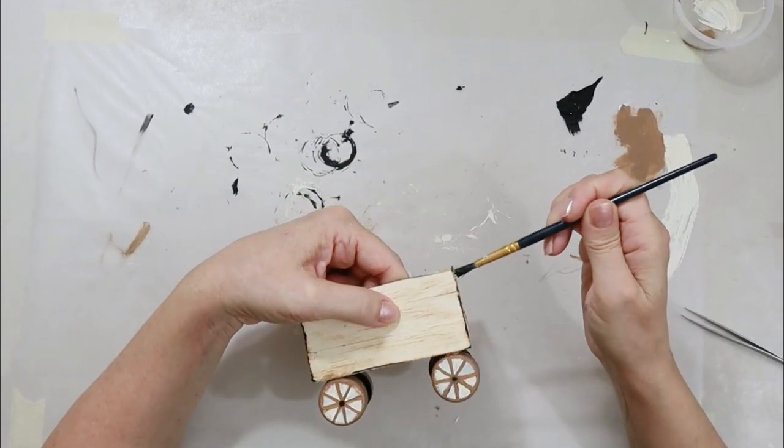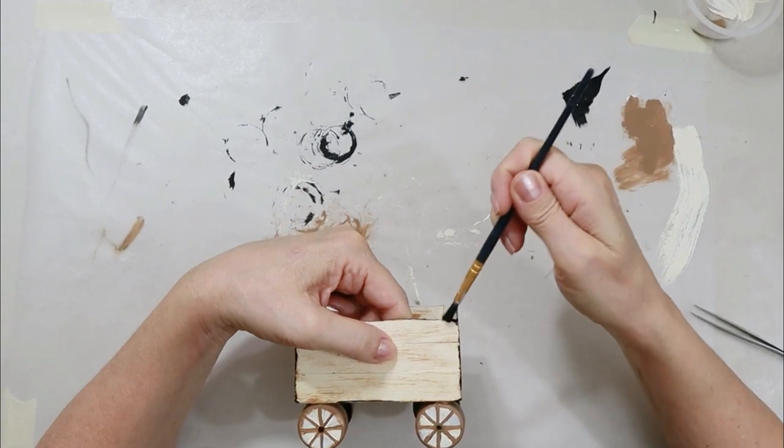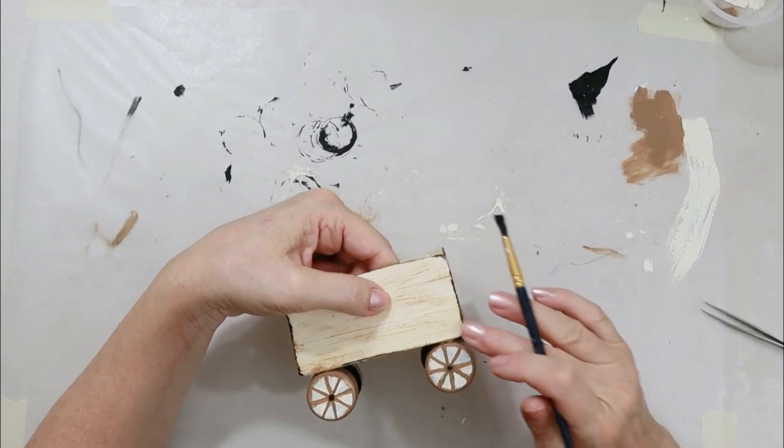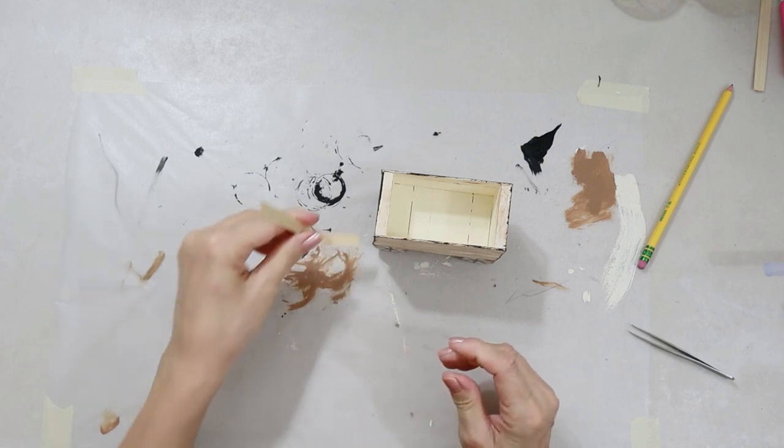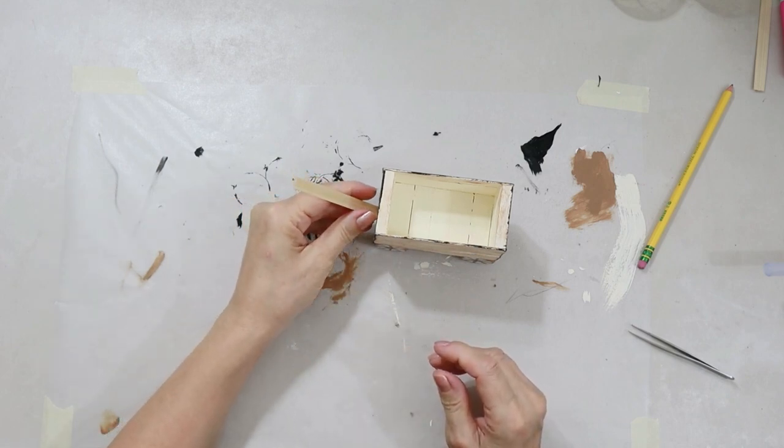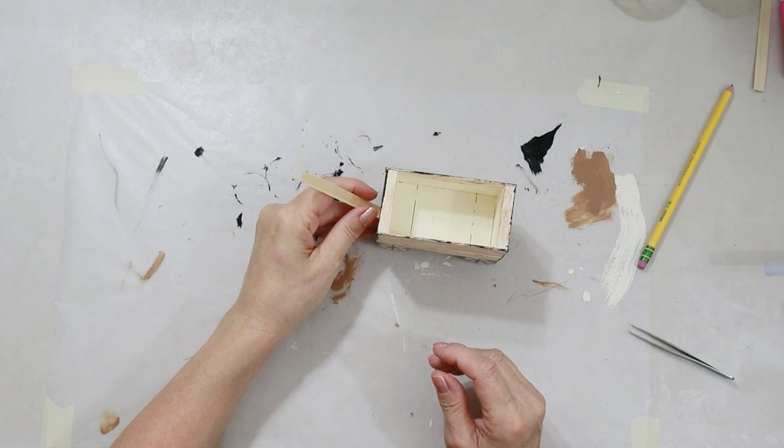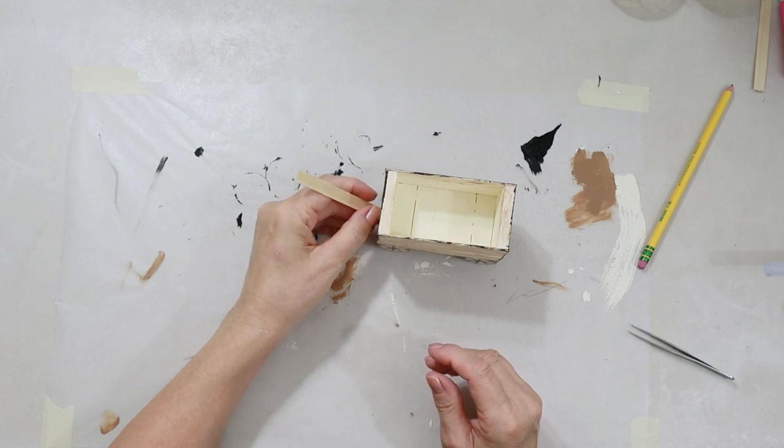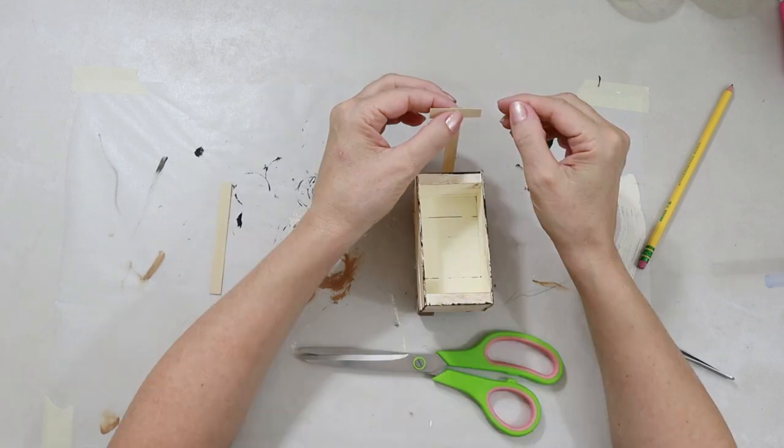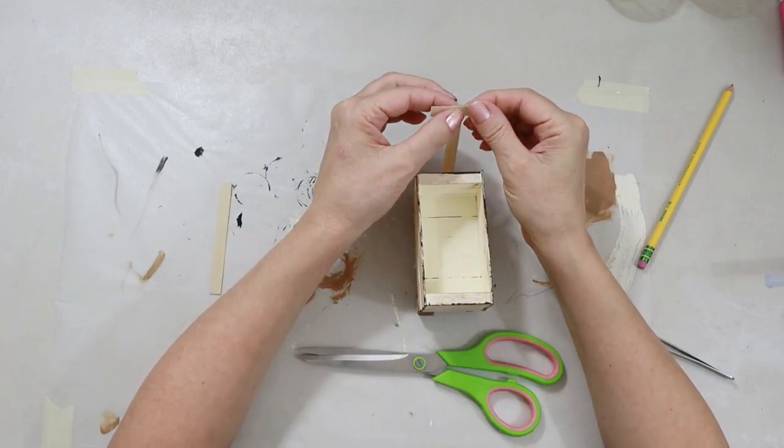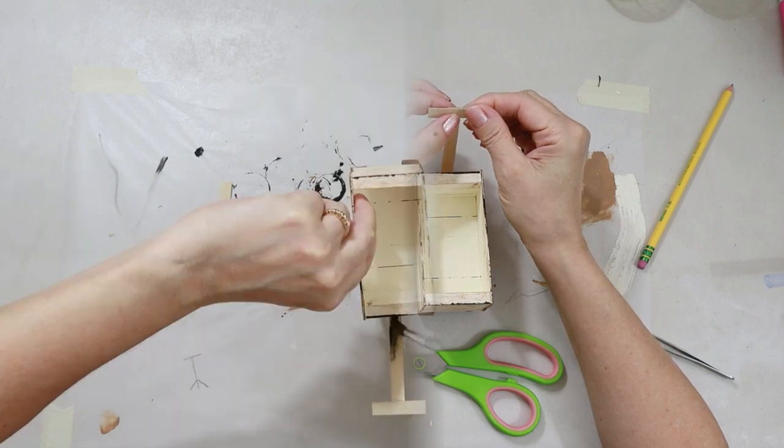And I'm just taking the black paint now and lightly distressing the edges of the little wagon, so it looks like it's been outside on a farm. And this is a reed left over from a Dollar Tree basket I took apart for another DIY. It is a perfect handle for this wagon because it bends and takes shape, and you can shorten it easily.